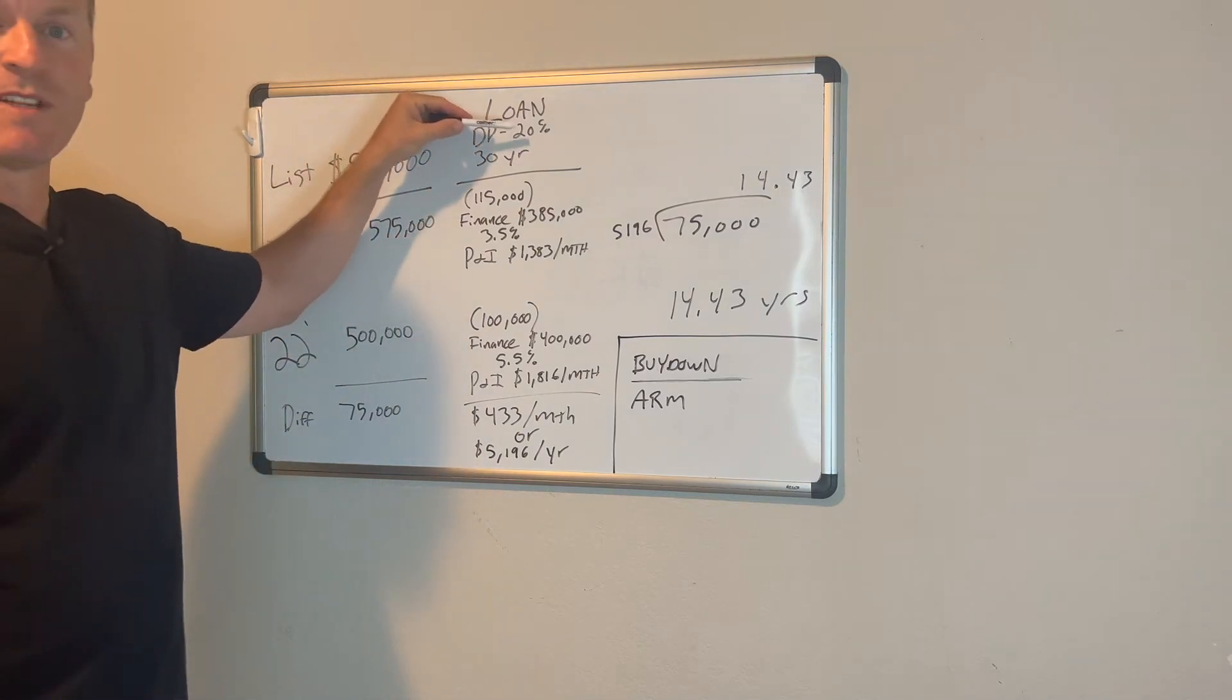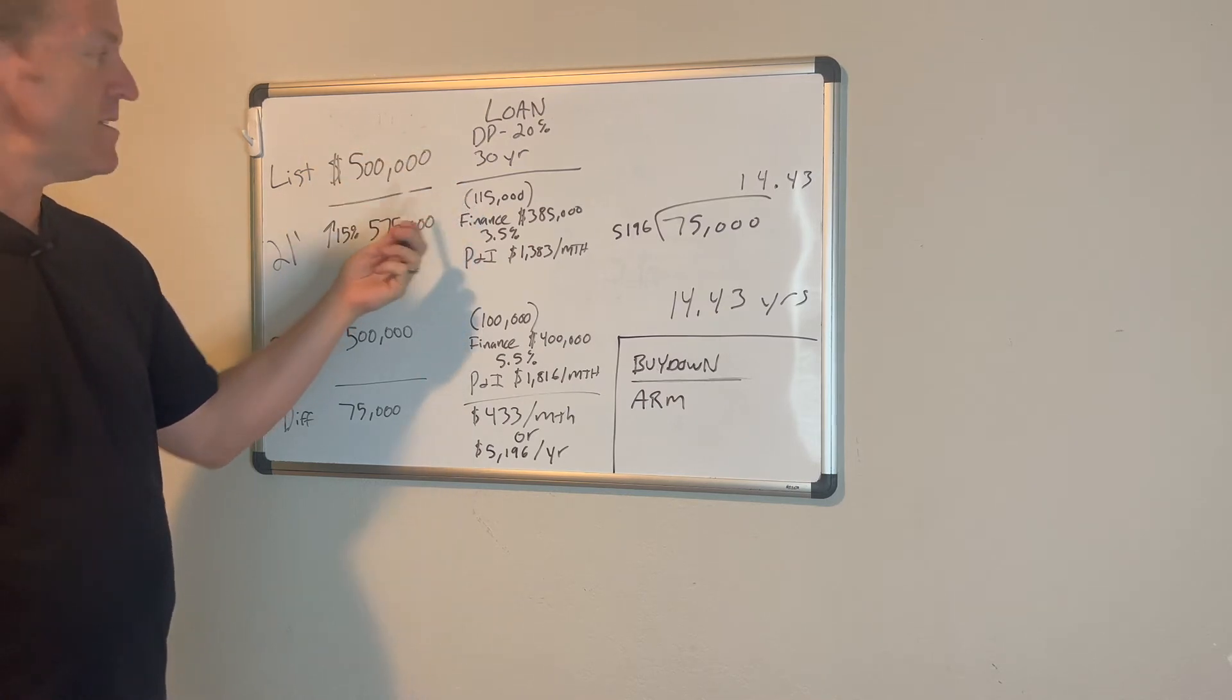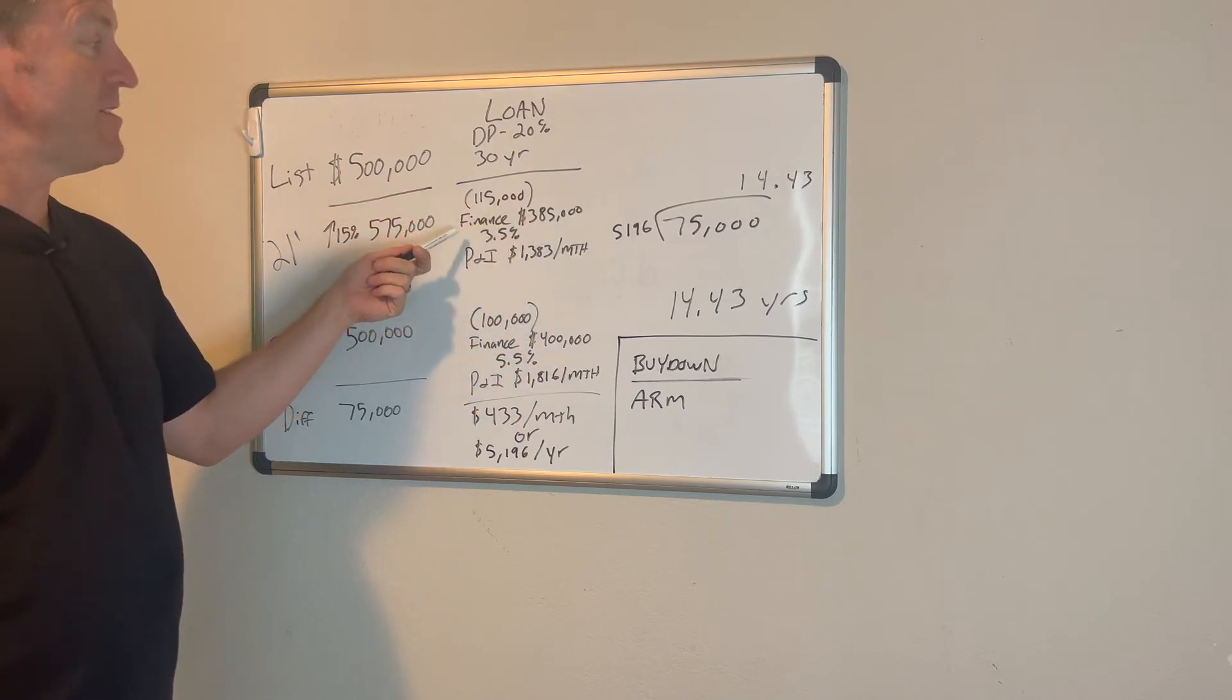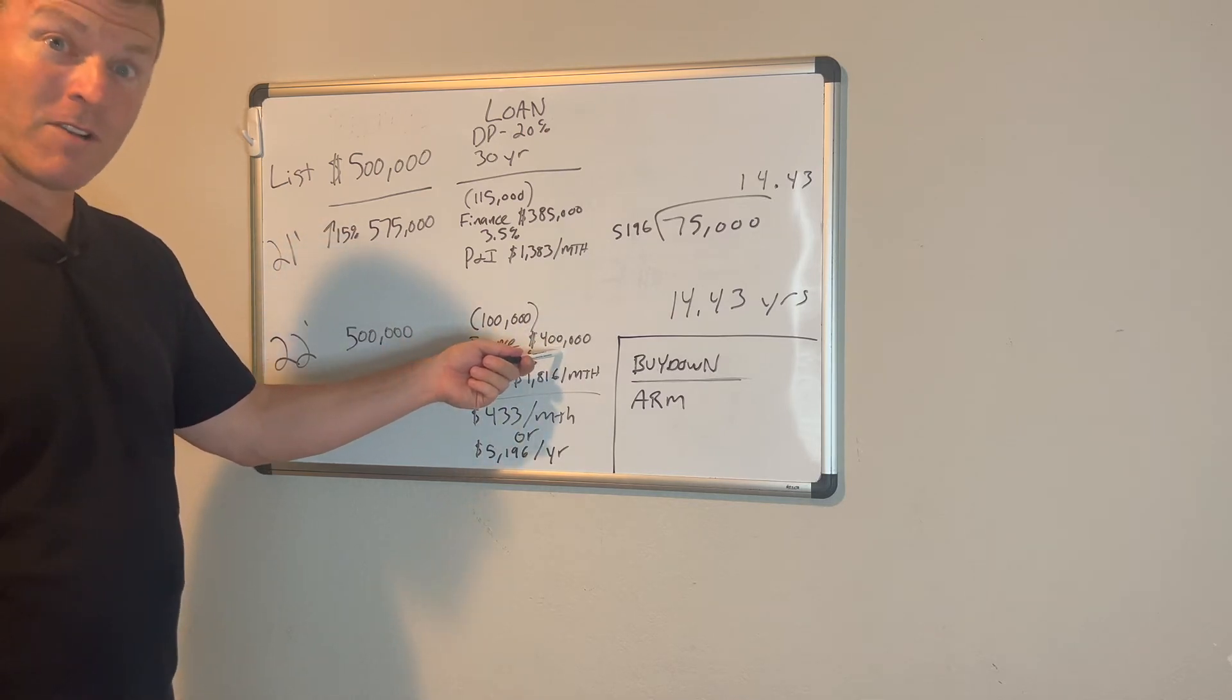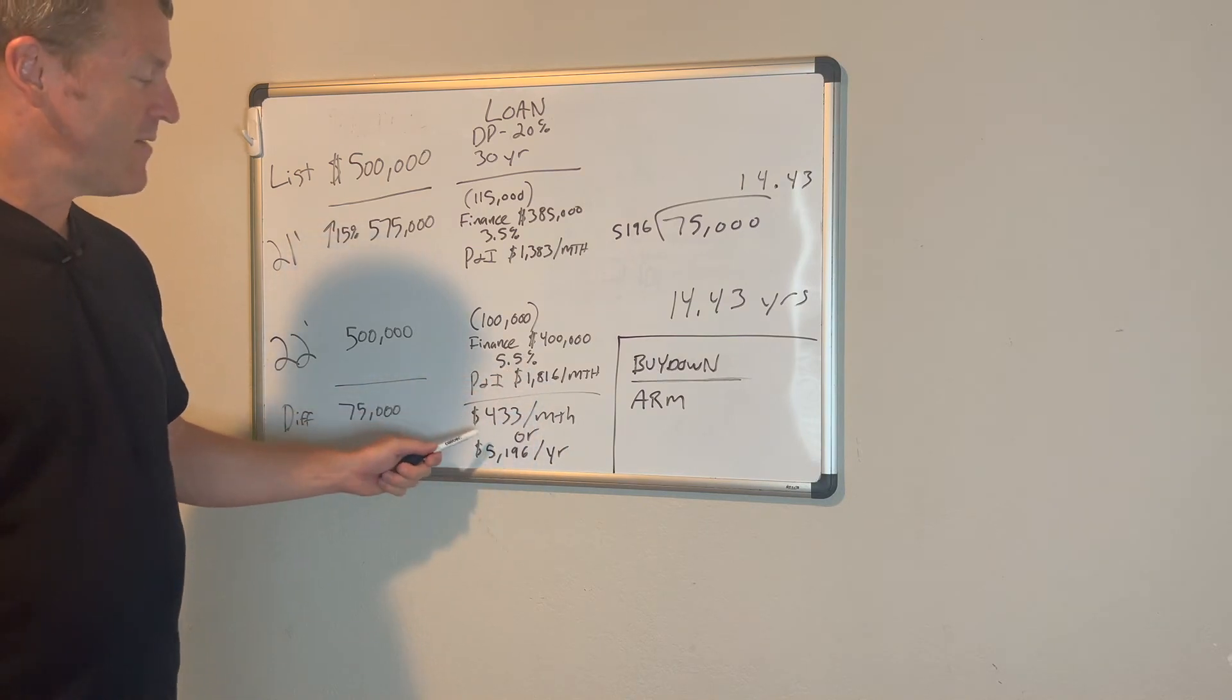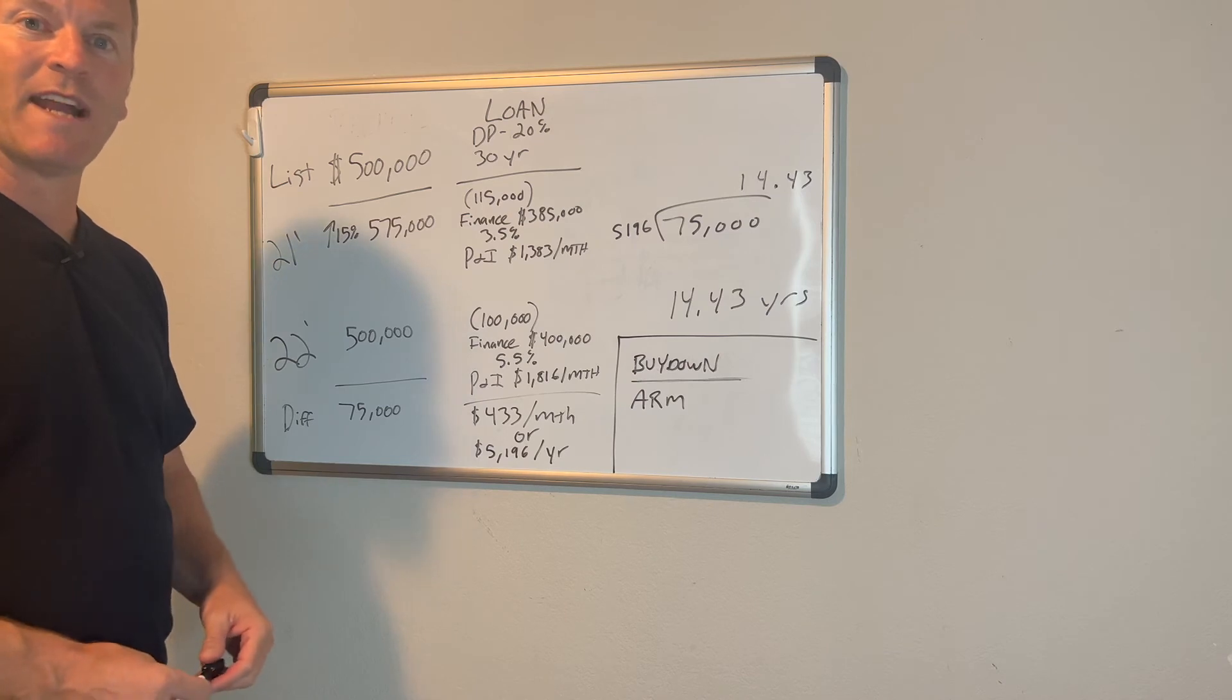When you get your loan, you're 20% down, 30-year conventional loan. This is where you look at your numbers. Your down payment would be $115,000 on the $575,000. That means you finance $460,000. And let's say you did get that 3.5% rate, then your monthly principal interest would be $1,383 per month. When you look at the other home, 2022, the $500,000 home, 20% down, you're financing $400,000. Let's say you had to pay a 5.5% interest rate. Your principal interest ends up being $2,270 per month.